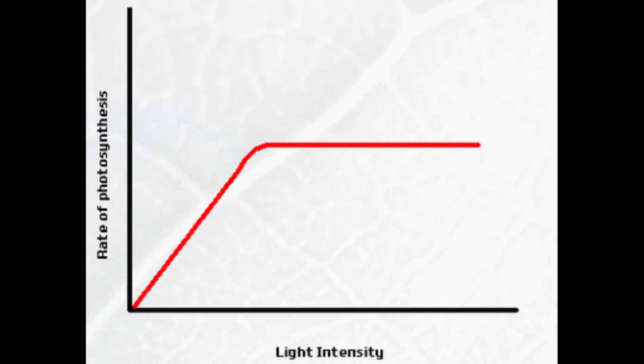Light saturation is the point at which the plant is working at its absolute optimum at that temperature. So the number of bubbles being produced will stagnate and will no longer increase despite the light intensity increasing as you bring the light bulb in closer.